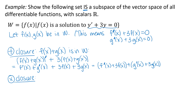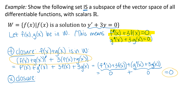I grouped the f terms next to each other and the g terms next to each other. Now I use the fact that both functions satisfy the original differential equation. I know that f'(x) + 3f(x) = 0, so that part is zero. And the same is true for g(x) — g'(x) + 3g(x) = 0. So zero plus zero equals zero. That means when I substituted f + g into the differential equation, I got zero, so f + g is a solution to that differential equation and therefore is in the set W. I have additive closure.